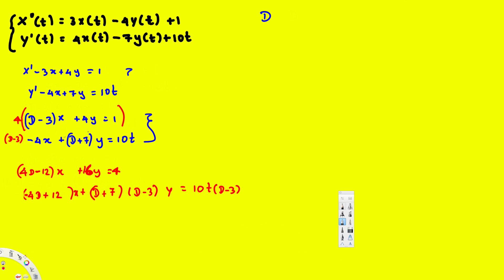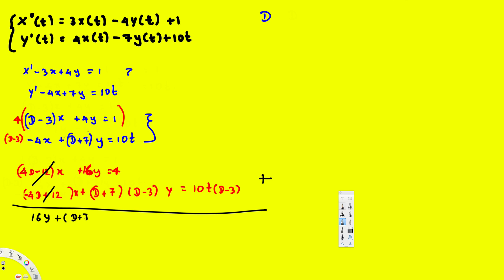You can see that when we add these two equations together, the first x terms cancel each other — that's the purpose of multiplying by 4 and by (D minus 3). Since one is negative and the other is positive they cancel. So we end up with 16y plus (D plus 7)(D minus 3)y equals 4 plus 10t.